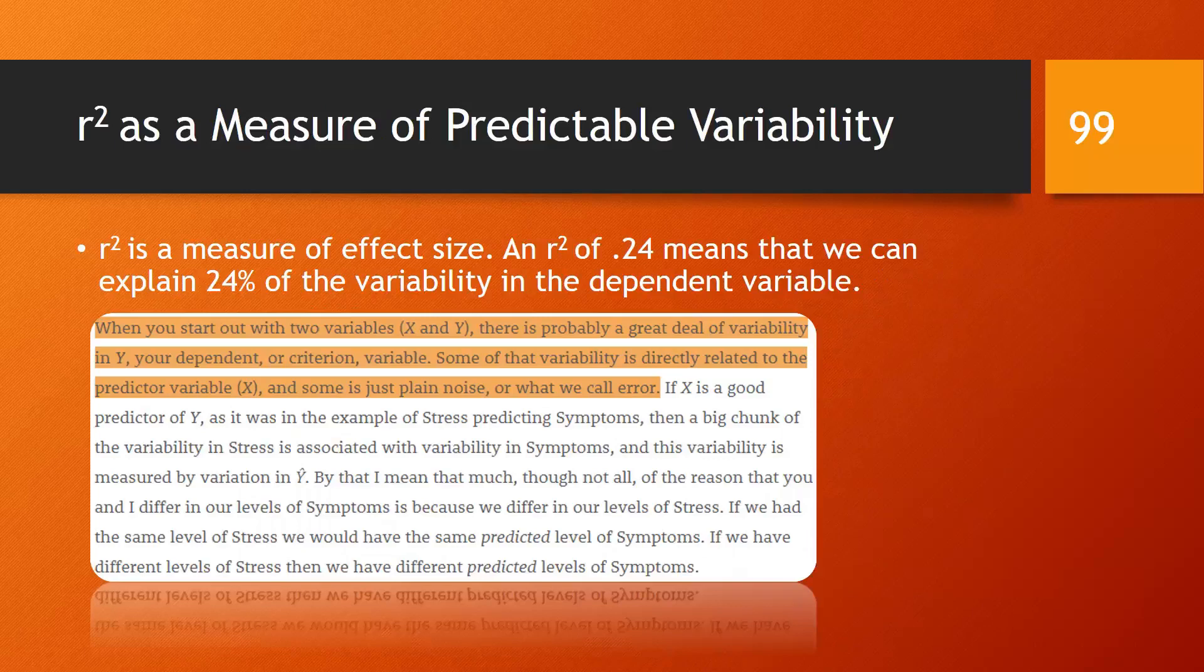Let's return to the concept of effect size. R squared is a measure of predictable variability. It is called the effect size. An R squared of 0.24 means that we can explain 24% of the variability in the dependent variable by using the independent variable.